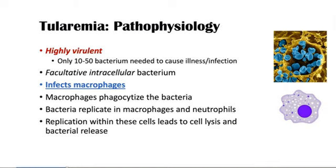Here is the tularemia pathophysiology. It is highly virulent — only 10 to 50 bacteria are needed to cause illness. It is a facultative intracellular bacterium. The bacteria causes macrophages — macrophages are involved in phagocytosis — and the bacteria are phagocytized and then replicate within the macrophages and neutrophils.